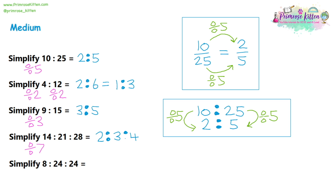Two and three are prime numbers, so we can't simplify the 2 to 3 to 4 ratio further — we can't divide three by two and get a whole number. Ratios should always give whole numbers, not decimals. Last question: 8, 24, and 24. All three are in the eight times table, so divide by eight: 8 ÷ 8 = 1, 24 ÷ 8 = 3, 24 ÷ 8 = 3. The answer is 1 to 3 to 3 — make sure you include both threes.